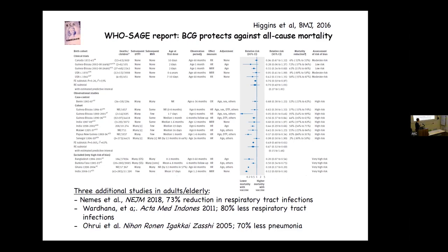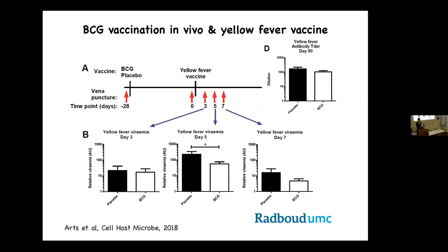This observation was made repeatedly as BCG was introduced in various populations. A systematic review by the WHO SAGE group looked at epidemiological studies over the last 100 years. They observed that everything on the left side of the vertical line — in the advantage of BCG — showed decreased mortality across many epidemiological studies, with a small number of randomized trials also showing the same thing.